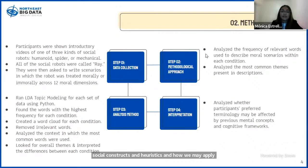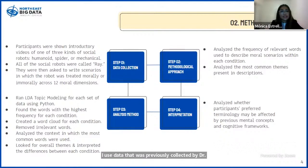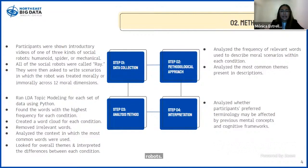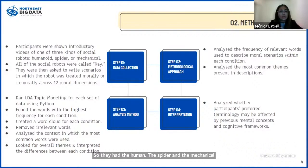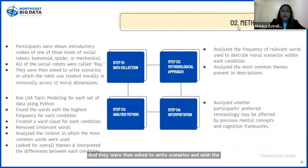For my data collection, I used data that was previously collected by Dr. Jamie Banks. In her original study, participants were shown introductory videos of one of three kinds of social robots: the humanoid, the spider, and the mechanical robots. All of the social robots were called Ray, and participants were then asked to write scenarios in which the robots were treated morally or immorally.